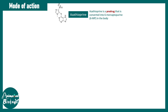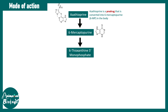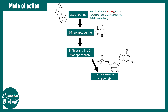Azathioprine is a prodrug that first gets converted into 6-mercaptopurine, which has structural similarity with the purine bases in DNA. It then gets converted into 6-thioxanthine 5-monophosphate and eventually into 6-thioguanine nucleotide.